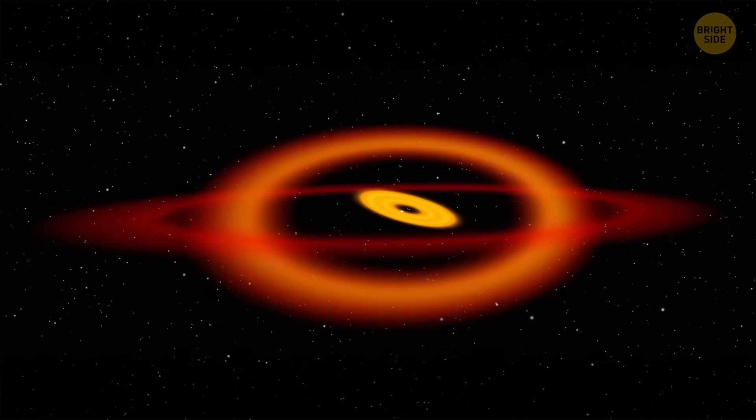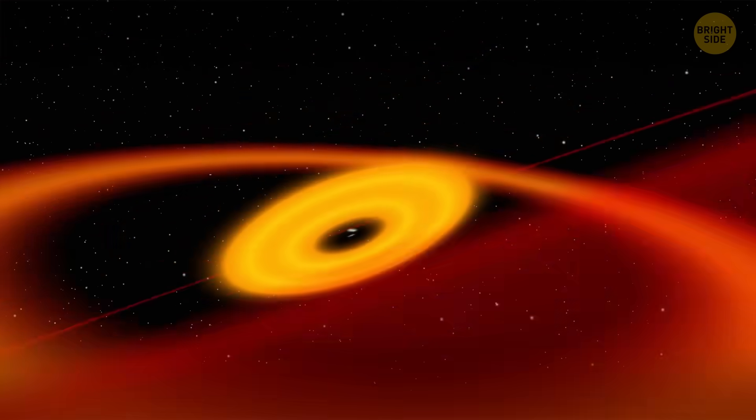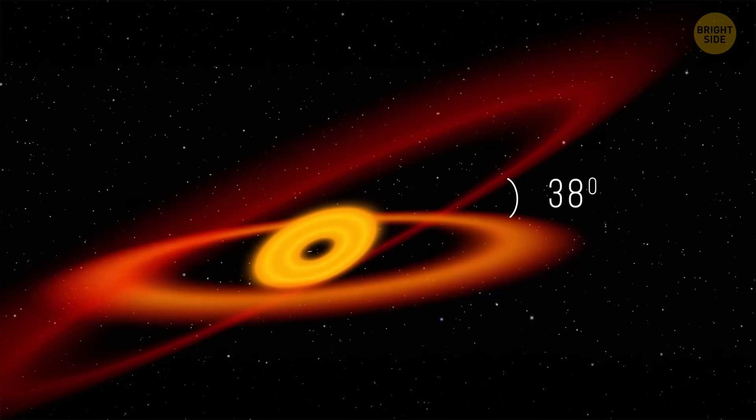Scientists have found out that the three rings are misaligned. The innermost ring swings widely in its orbit, and the outermost ring has a tilt of 38 degrees.